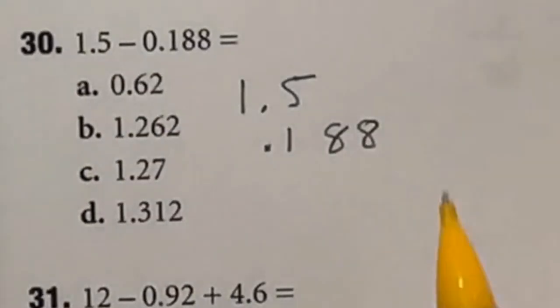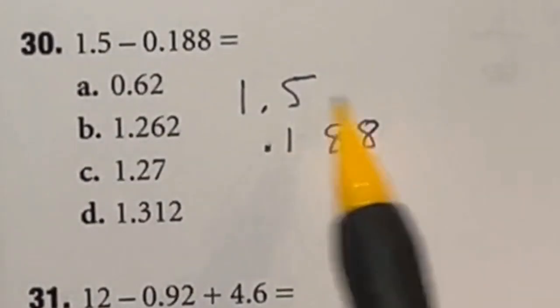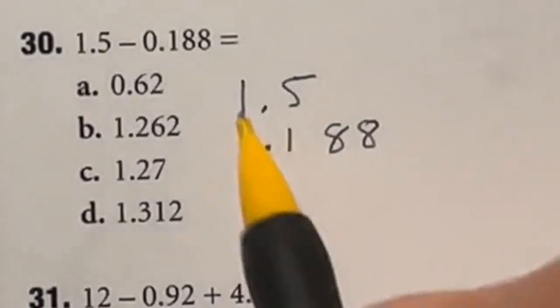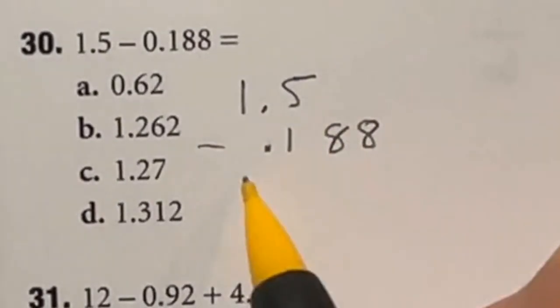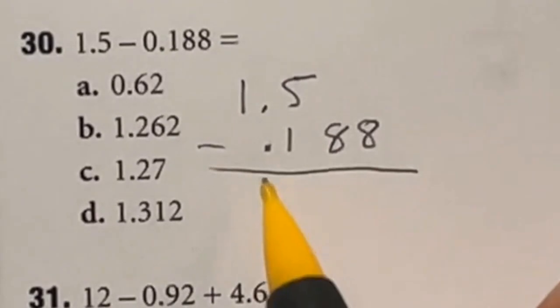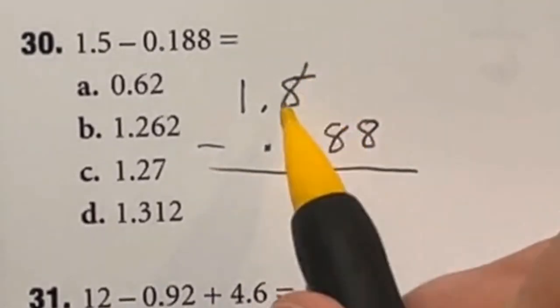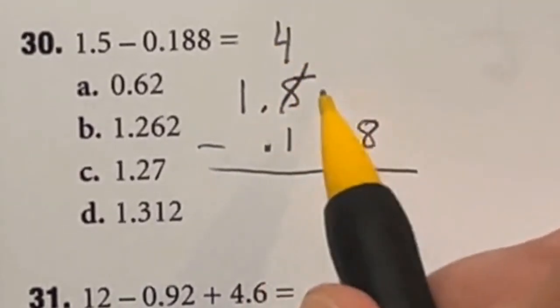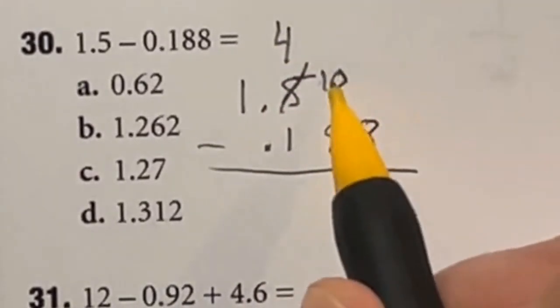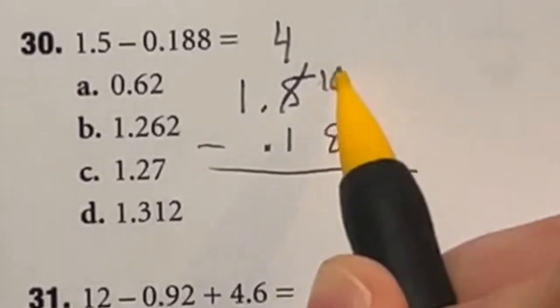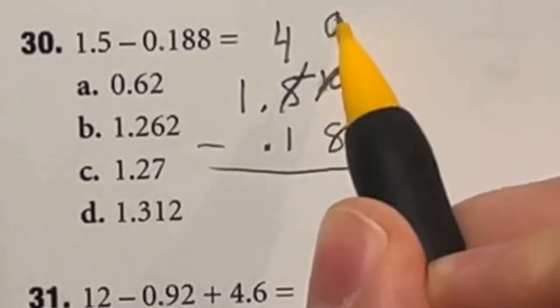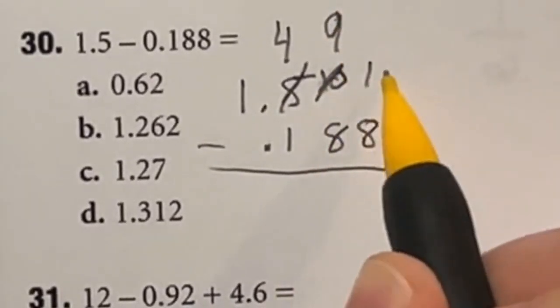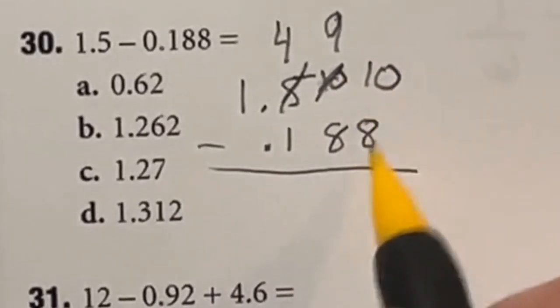Number 30 is seeing if you know how to carry over when you have missing digits in your numbers. So we're doing 1.5 minus this 0.188 down here. So in order for us to do this, we would need to, first off, cancel out this five, change it to a four, and carry a 10 over to the next place. Now, I would go ahead and subtract here, but I know that I also need to cancel that out, make it into a nine, because I have to carry a one over into this place so that we can do our subtraction.